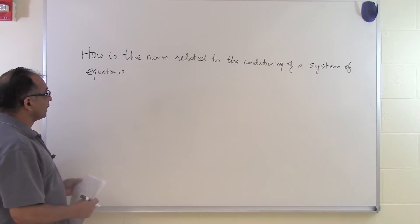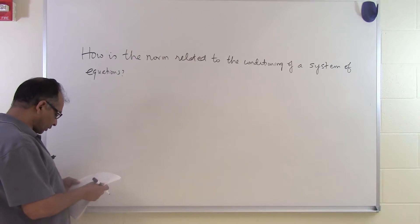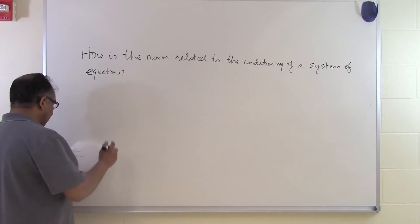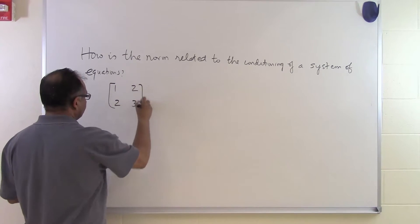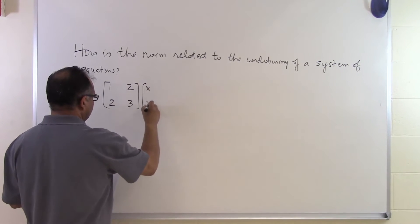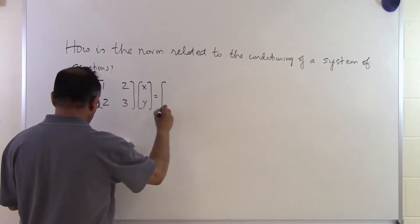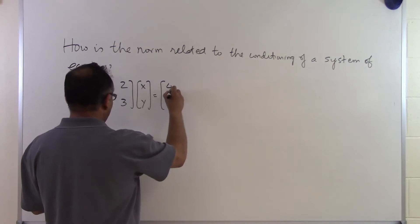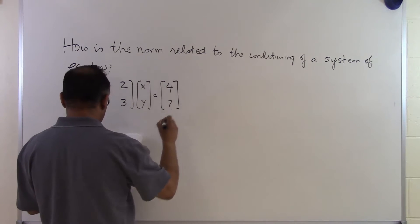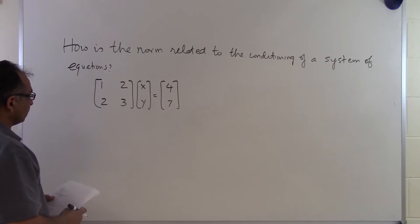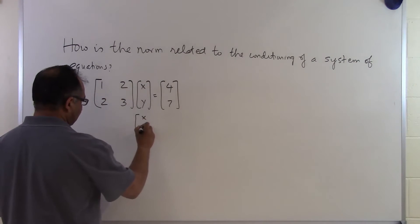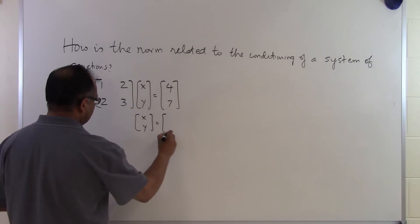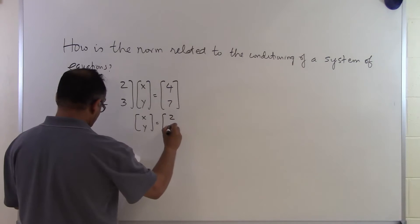In this segment we will continue to talk about how the normal matrix is related to the conditioning of a system equation. We will take another example: if we have a set of equations like this — [1, 2; 2, 3] times X equal to [4, 7] — then we know that for this particular system of equations the solution is (2, 1).